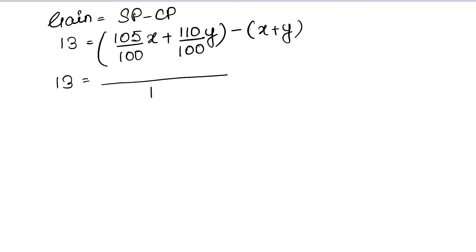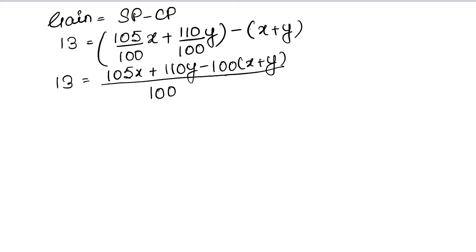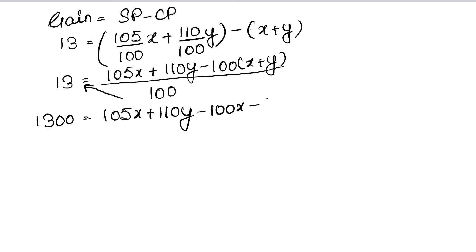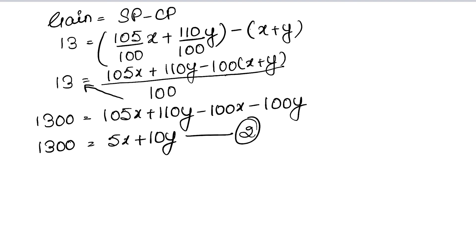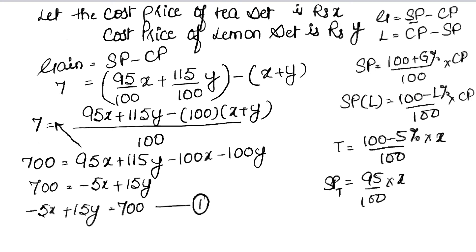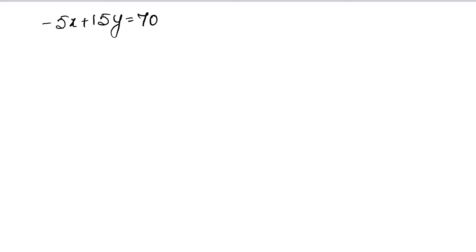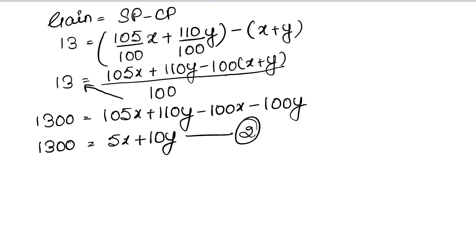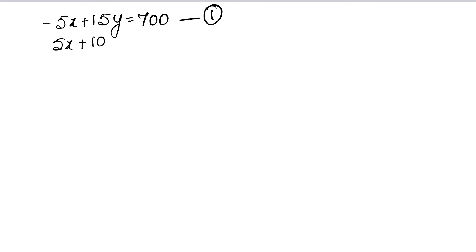Solving: LCM 100 लेने पर, 105X + 110Y − 100(X + Y) = 1300. Expand करने पर: 105X + 110Y − 100X − 100Y = 1300. इसलिए 5X + 10Y = 1300. यह आ गई हमारी second equation.